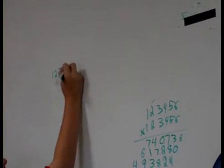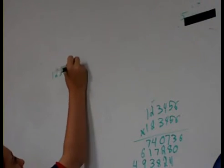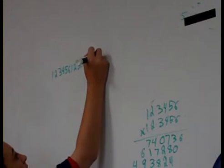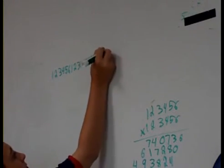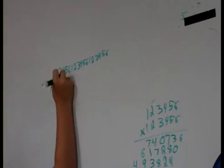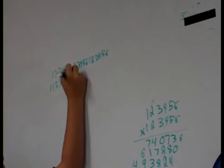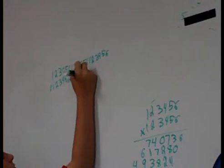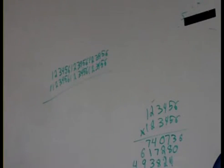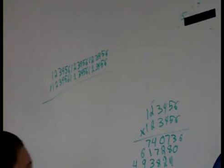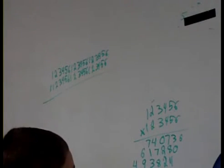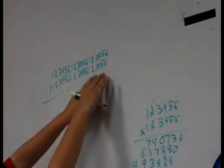And then you're going to do it two more times: 1, 2, 3, 4, 5, 6. And then you're going to multiply it by the same number. And then the number that you multiplied, 1, 2, 3, 5, 6 times 1, 2, 3, 4, 5, 6, you've got this answer, then you're going to write this answer right here.